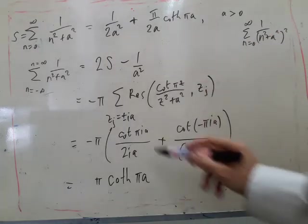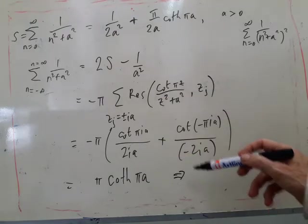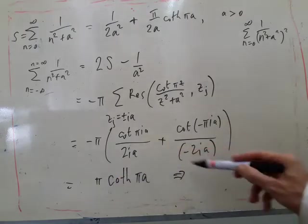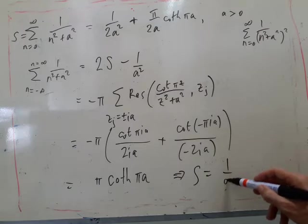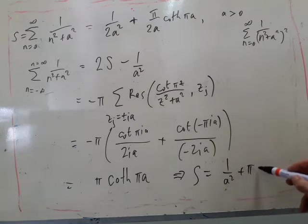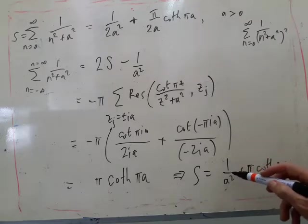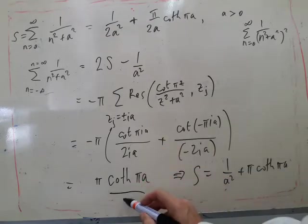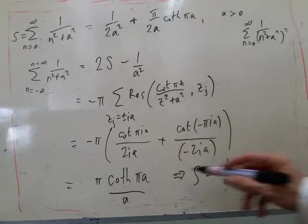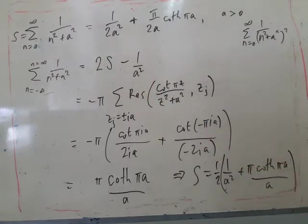So then if we rearrange this, you can see we get S equals 1 over A squared plus pi coth pi A. And then, sorry, I forgot to divide by 2A, and then this is all halved because of the 2S, which is what we're trying to prove for the first bit.